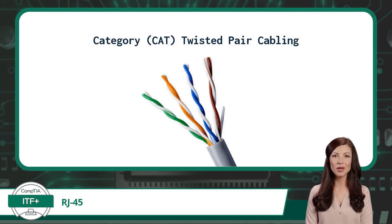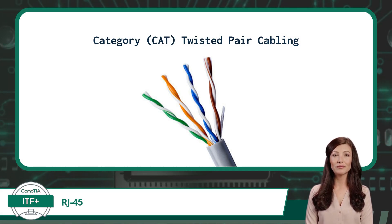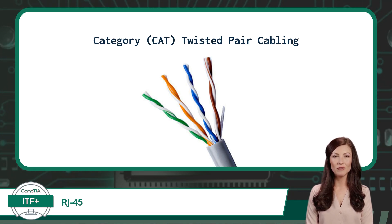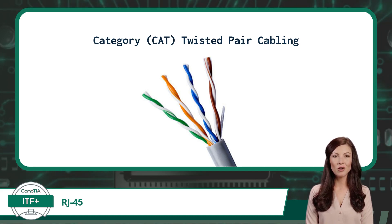Just to make sure I didn't lose you when I mentioned CAT cables, here is a quick breakdown. Category or CAT cables are a type of twisted pair cabling. Inside a CAT cable are 8 individual wires, grouped into 4 pairs. Each pair is color coded and then twisted together. The cable is then terminated with an RJ45 connector.